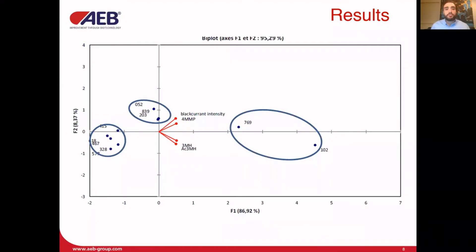This PCA graph shows the projection of the wines in the space defined by thiol concentration and blackcurrant aromas, and we can identify three different groups of wines. The first group is positively correlated to all variables, indicating that all thiols are involved in blackcurrant aroma perception. In the second group, 4MMP seems to be the main compound responsible for the perception of blackcurrant aroma. The last group was negatively correlated to all variables, in which thiol concentrations present in the wines do not express a significant blackcurrant aroma.